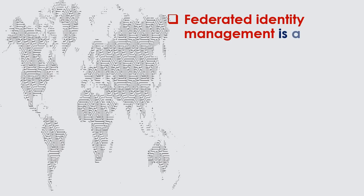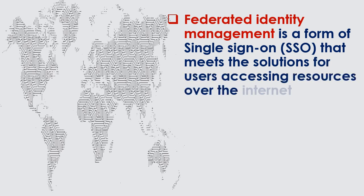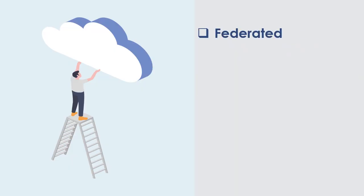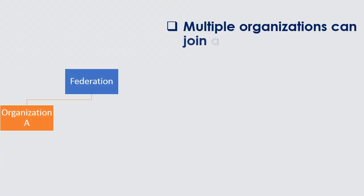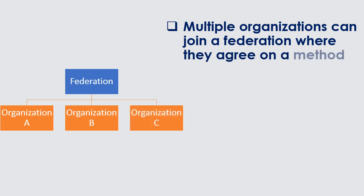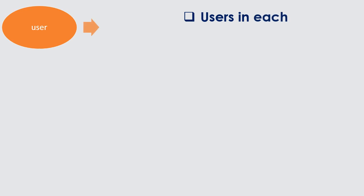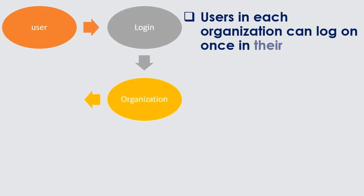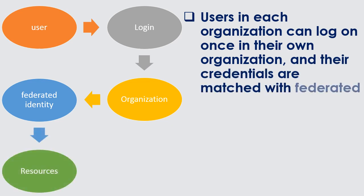Federated Identity Management is a form of single sign-on, SSO, that meets the solutions for users accessing resources over the Internet. Multiple organizations can join a federation where they agree on a method to share identities between them. Users in each organization can log on once in their own organization, and their credentials are matched with Federated Identity. They can then use this Federated Identity to access resources in any other organization within the group.